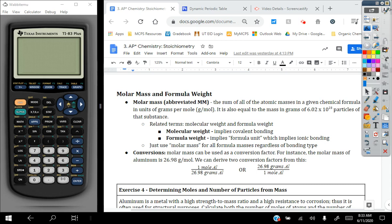As a result of using a molar mass, we know that that unit is grams per mole, or grams per one mole. So we can set up two conversion factors. For instance, aluminum has a molar mass of 26.98 grams per mole. So you can set up a conversion factor of one mole of aluminum over 26.98 grams of aluminum, or 26.98 grams of aluminum over one mole.